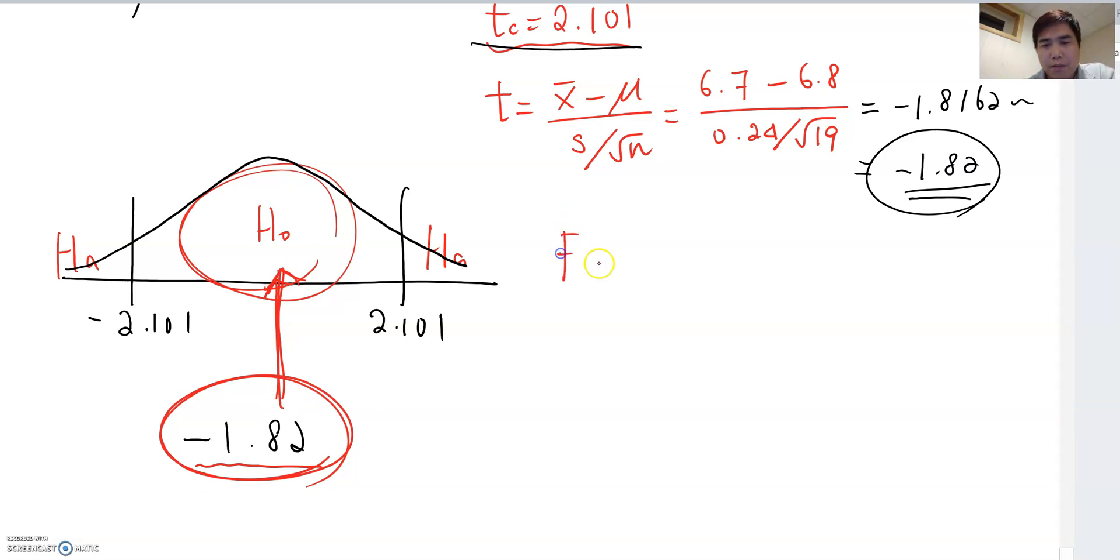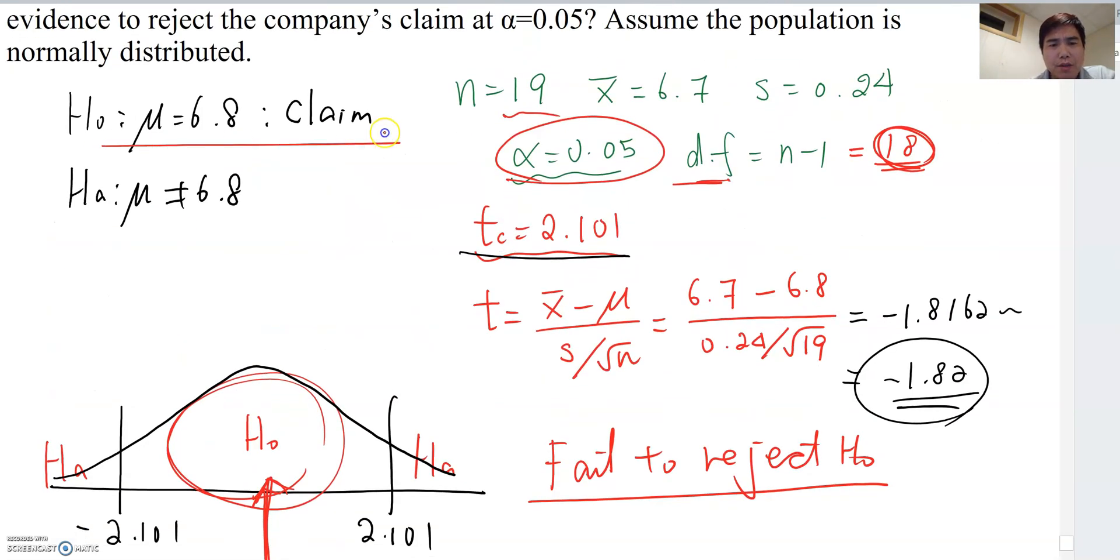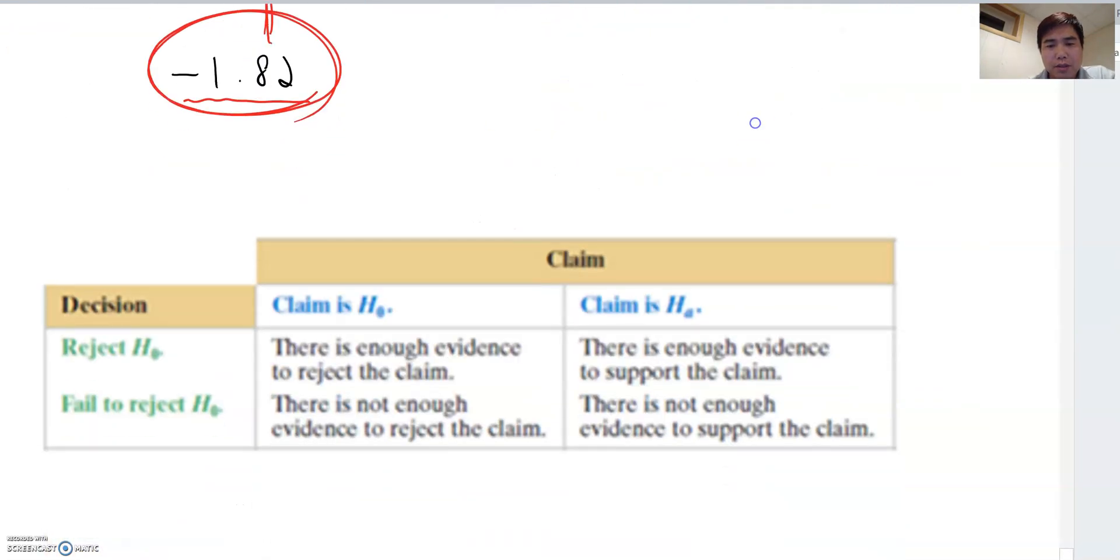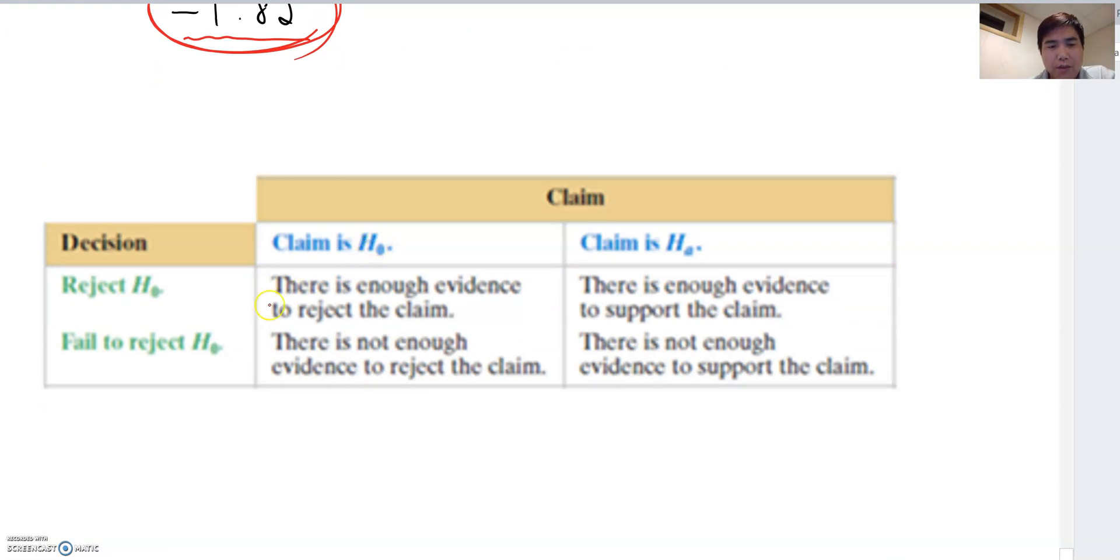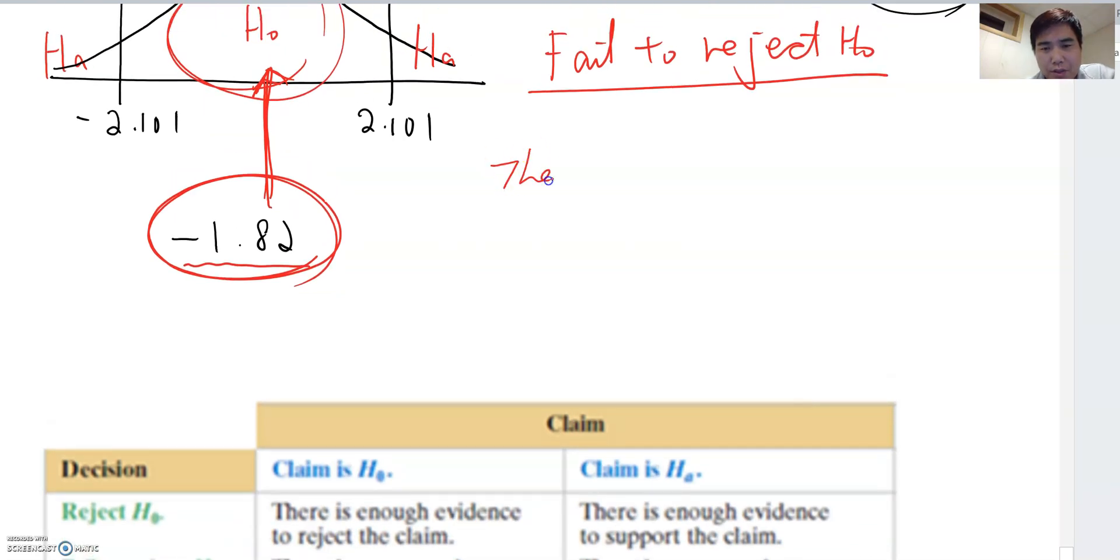So this time, we fail to reject H0. Now we got fail to reject H0, and where was the claim? The claim was H0. So go to the table and then make our conclusion. Claim is H0 and we fail to reject H0. Therefore, our conclusion becomes there is not enough evidence to reject the claim. That will be the answer for this problem.